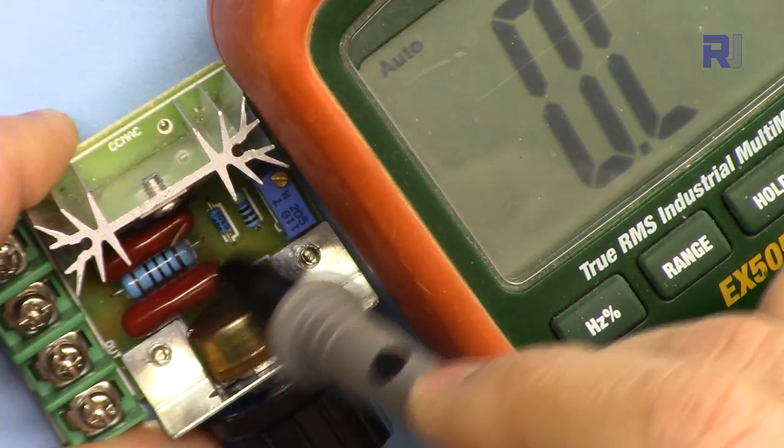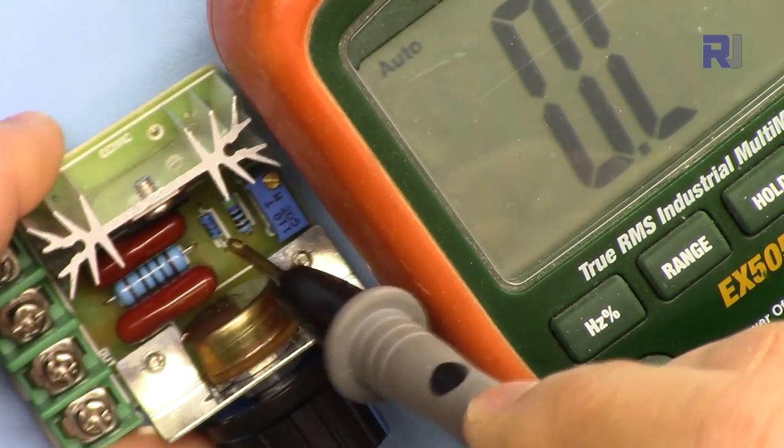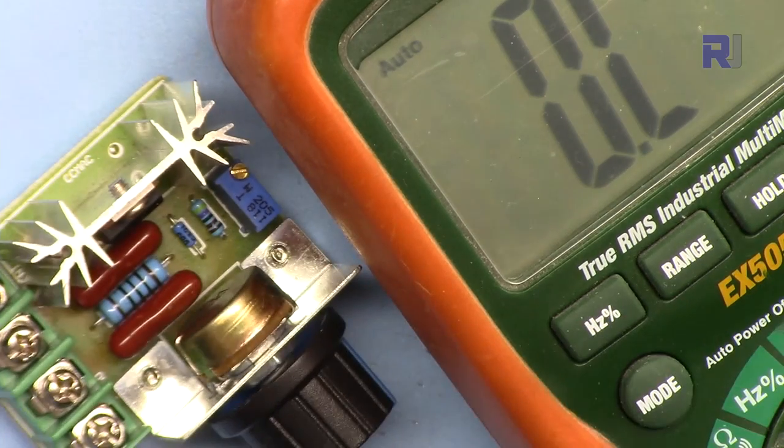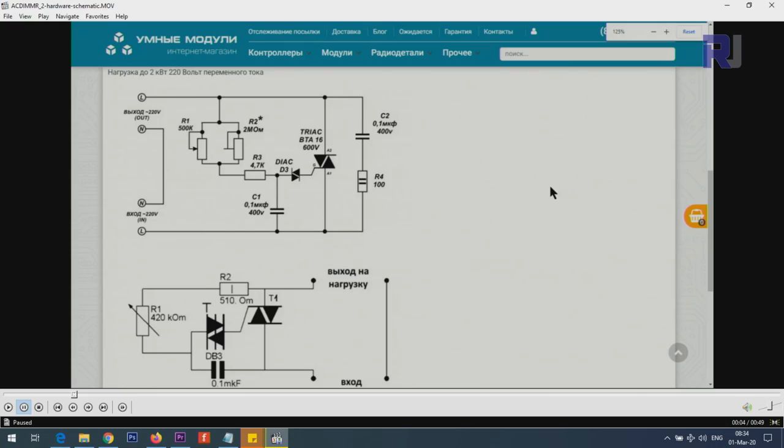And then this resistor is here, and this is 4.7 kilo-ohm resistor, which is this one with the same capacitor 0.1 microfarad 400 volts. So these two are here. Let me measure that and show you.